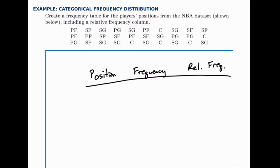So the positions we have are point guard, shooting guard, small forward, power forward, and center as our five categories. Then we just go through and count how many there are of each one.